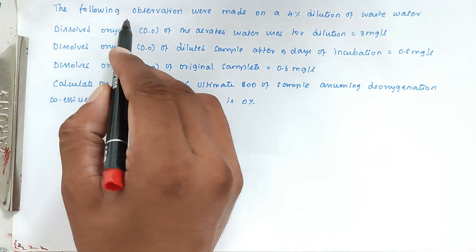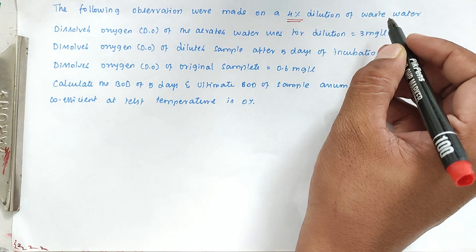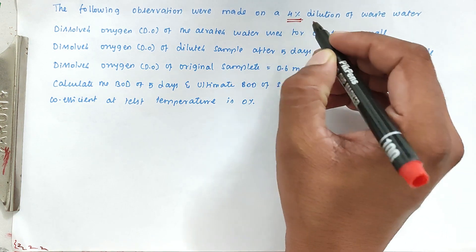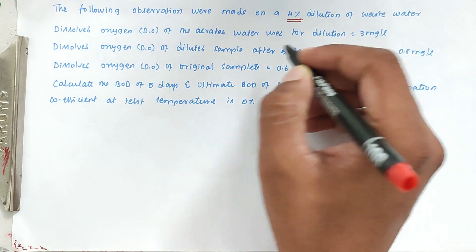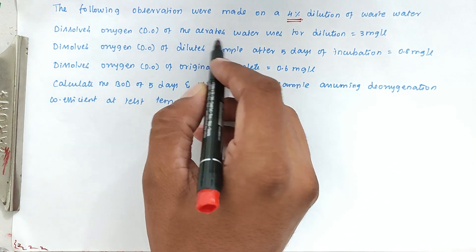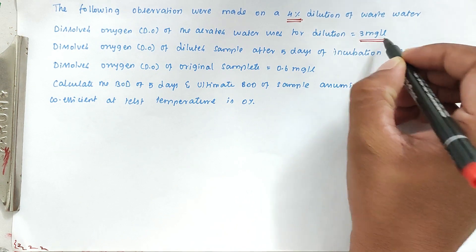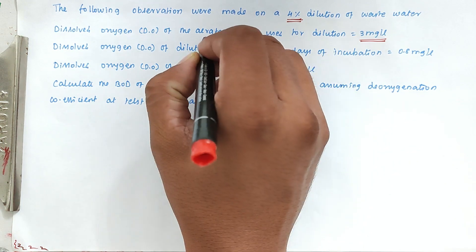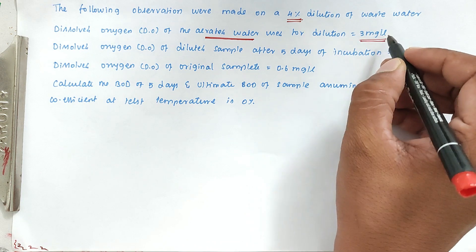So the problem is, the following observations were made. We have 4% of dilution of waste water — so 4% of waste water into 100% of water. The dissolved oxygen (DO) of the aerated water used for dilution is 3 mg per litre.